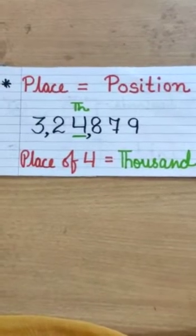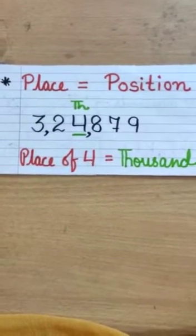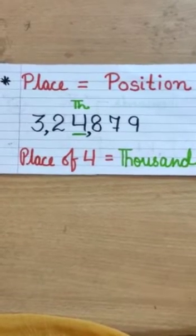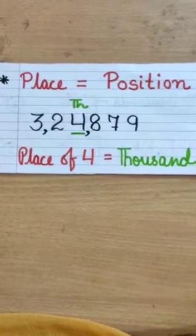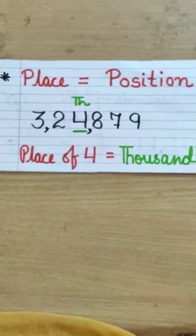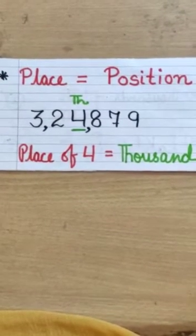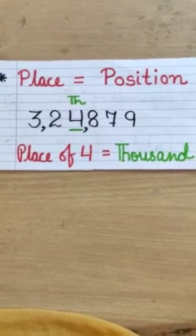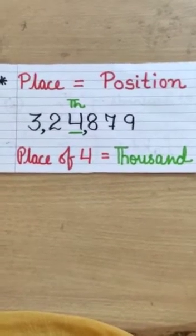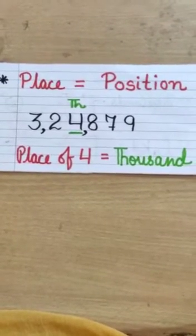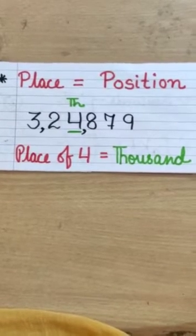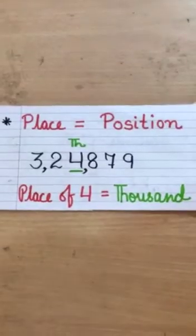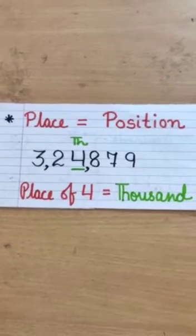Let's see. 9 is at ones. 7 is at tens. Eight hundreds. Four thousands. Two ten thousand. Three as lakh. So, if I found the place of digit 4, we found that it is thousand. Yes, it is absolutely correct. So, place means only the position where the digit lies in the whole number. I hope you have understood this topic.